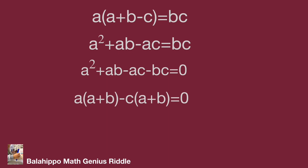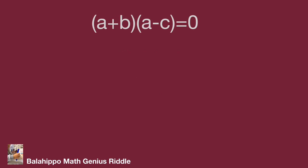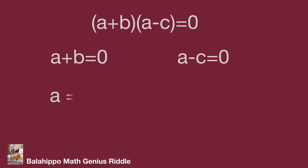In this equation we find the factors. Rearranging the terms, we get the quantity (a plus b) multiplied by the quantity (a minus c) equal to zero. So either a plus b equal to zero, or a minus c equal to zero — meaning a equal to minus b, or a equal to c.